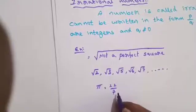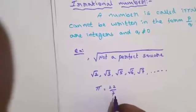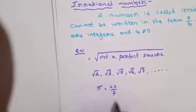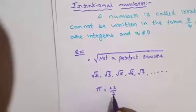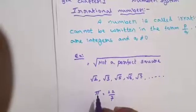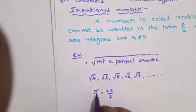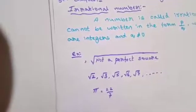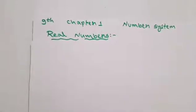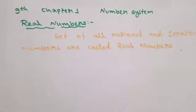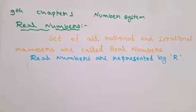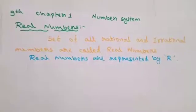Next is real numbers. Real numbers are the set of all rational and irrational numbers combined together.